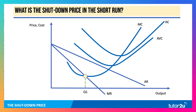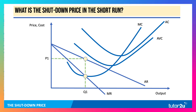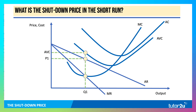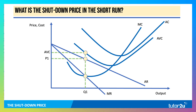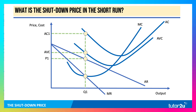Here's an example of a situation where a firm might consider shutting down. The profit-maximising output is Q1, and they can charge a price P1 at that output, but that price is below the average variable cost. So they're not even covering their variable costs, let alone the fixed costs. P1 to AC1 shows the loss per unit if they carry on producing.